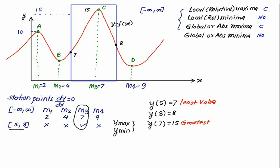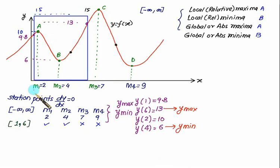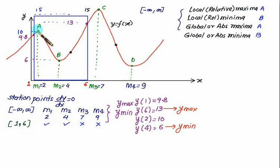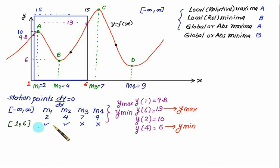Now suppose we change the interval to 1 to 6. In that case, two stationary points are valid — m1 = 2 and m2 = 4 — giving one maxima at point a and one minima at point b. We now have one global maxima and one global minima. We calculate values at both stationary points and both endpoints, then decide the y-max and y-min. Your answer entirely depends on the given range.